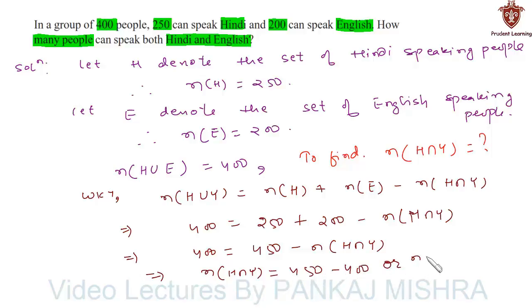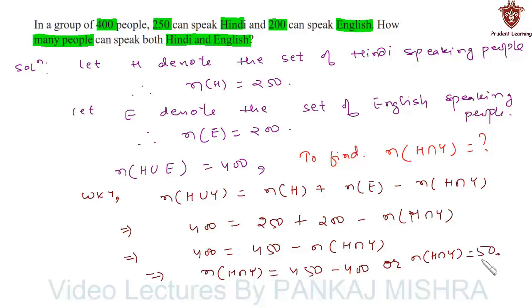Therefore, the number of elements in H intersection E equals 450 minus 400, which is 50. This is the number of people who speak both Hindi and English. Hence, the number of people who can speak both Hindi and English is 50. This completes our solution.